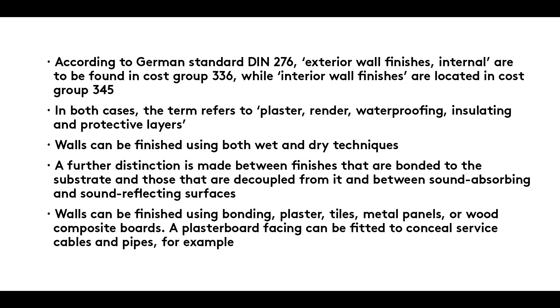Walls can be finished using bonding, plaster, tiles, metal panels or wood composite boards. A plasterboard facing can be fitted to conceal service cables and pipes, for example.